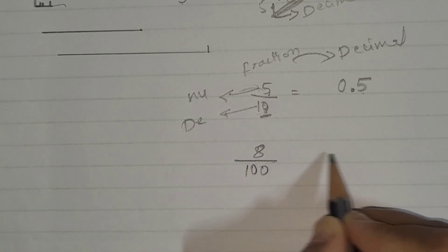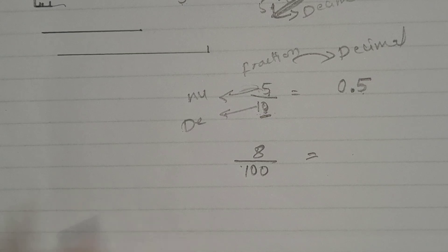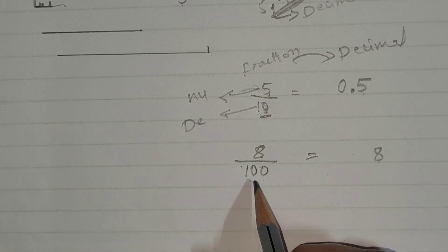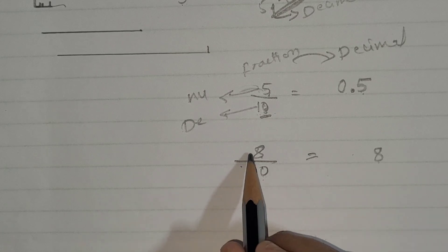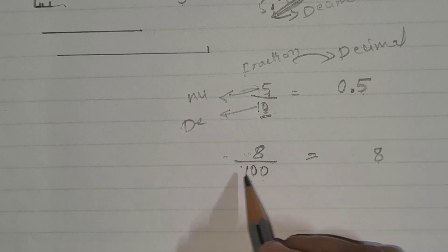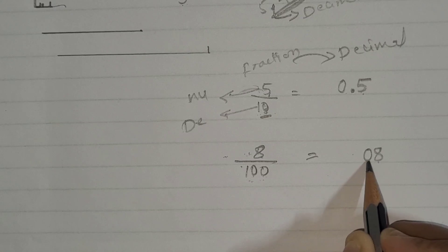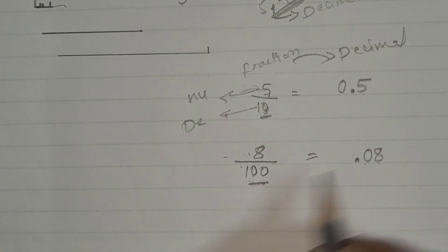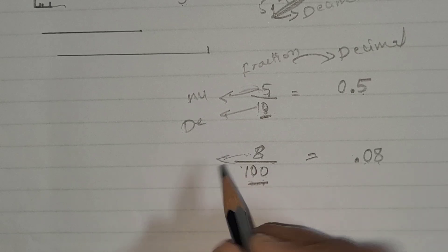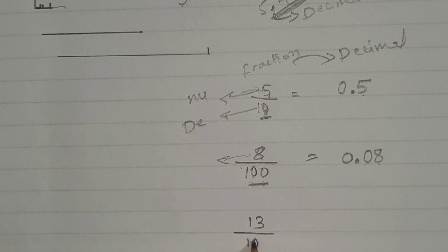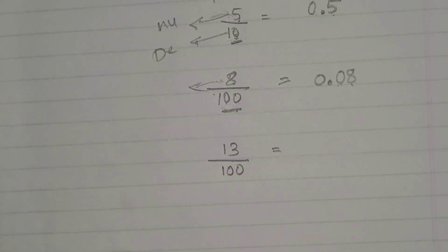Let's take another example: 8 by 100. Write the numerator as it is. Now in the denominator there are two zeros, so place the decimal point after two digits. We only have one digit - eight - so we need to add a zero. Writing from right to left: eight, zero - two digits - then the point, then zero. So the answer is 0.08.